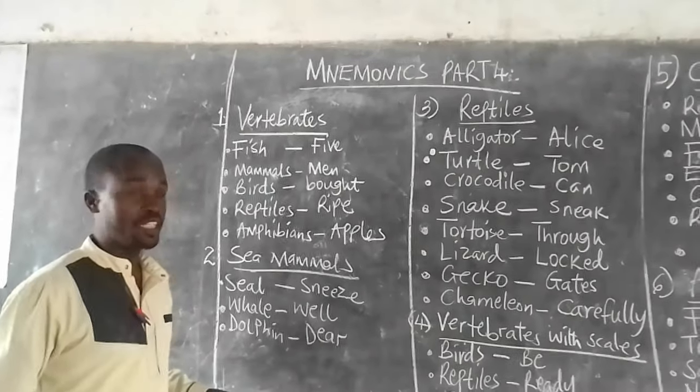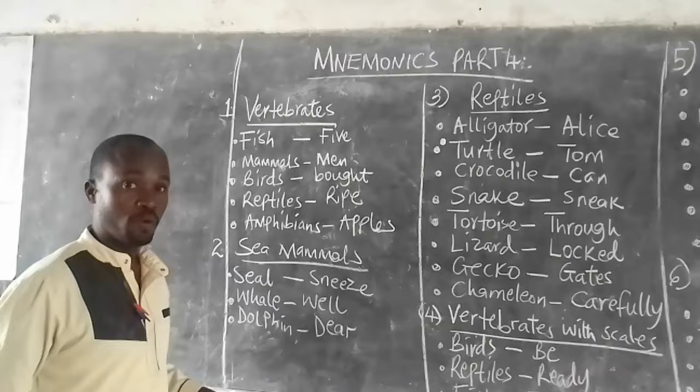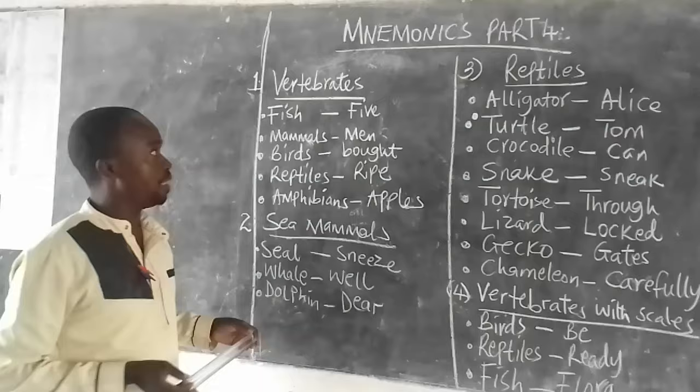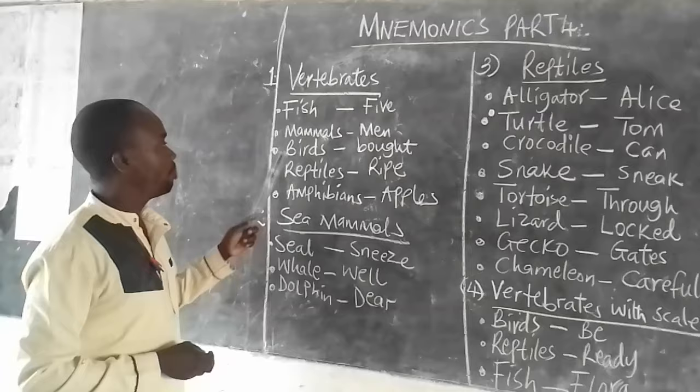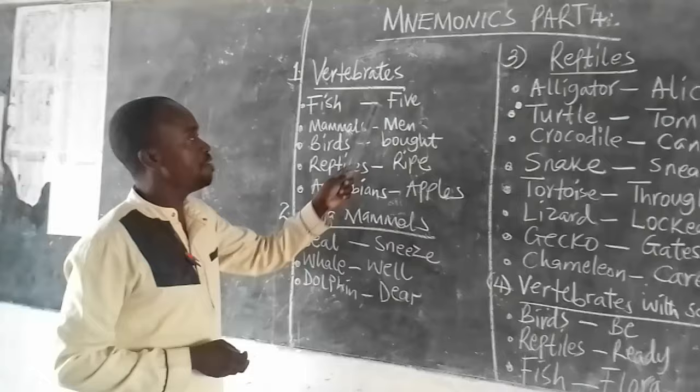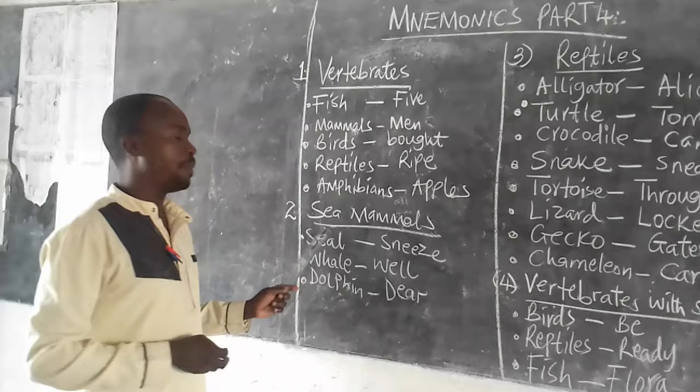Mulei Evaristus mnemonics part 4, enjoy the lesson. We are going to start with vertebrates. Vertebrates are animals with a backbone. They include fish, mammals, birds, reptiles, and amphibians. Mnemonic: five men bought ripe apples.